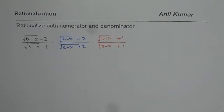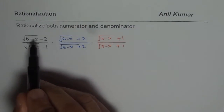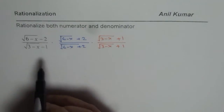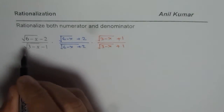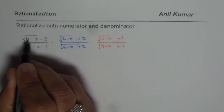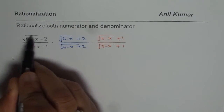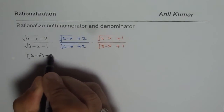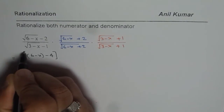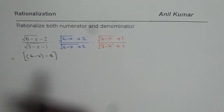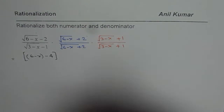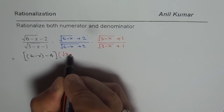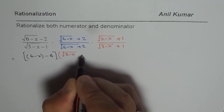When you want to rationalize a numerator, you expand those two conjugate terms and keep the rest as is. When you expand those two terms, you get the square of the square root term, which is 6 minus x, minus 2 squared which is 4. What remains in the numerator in addition to that is square root of (3 minus x) plus 1.